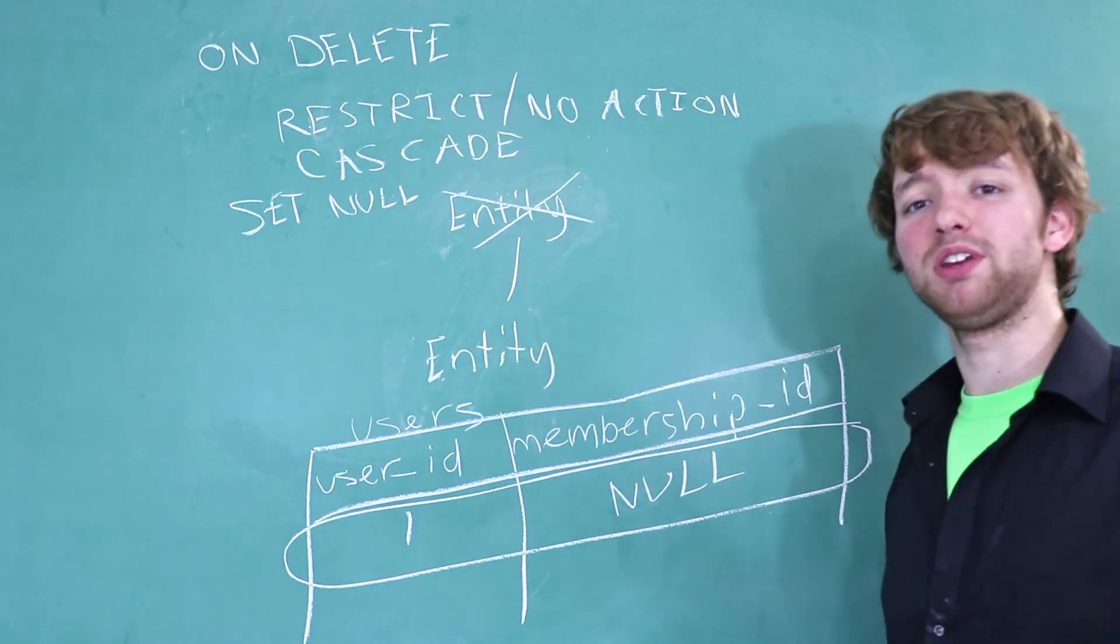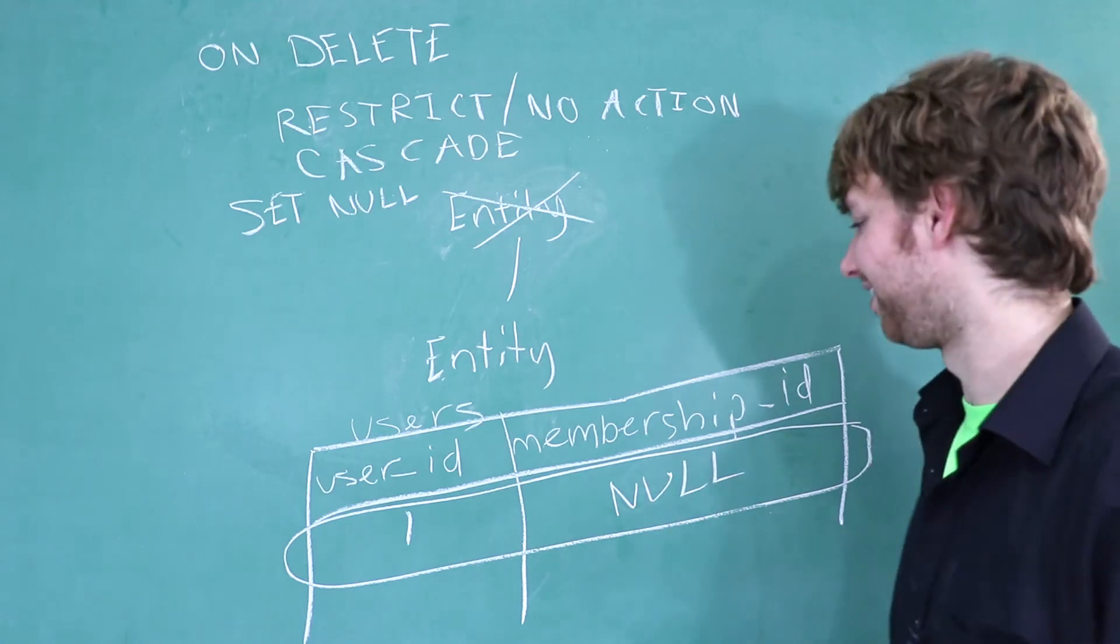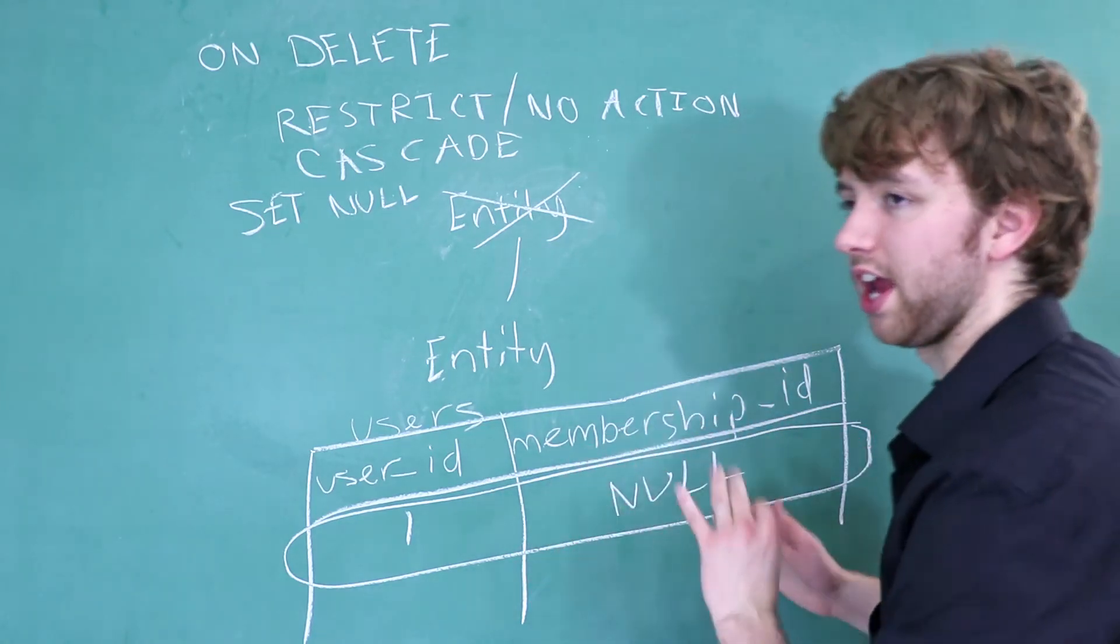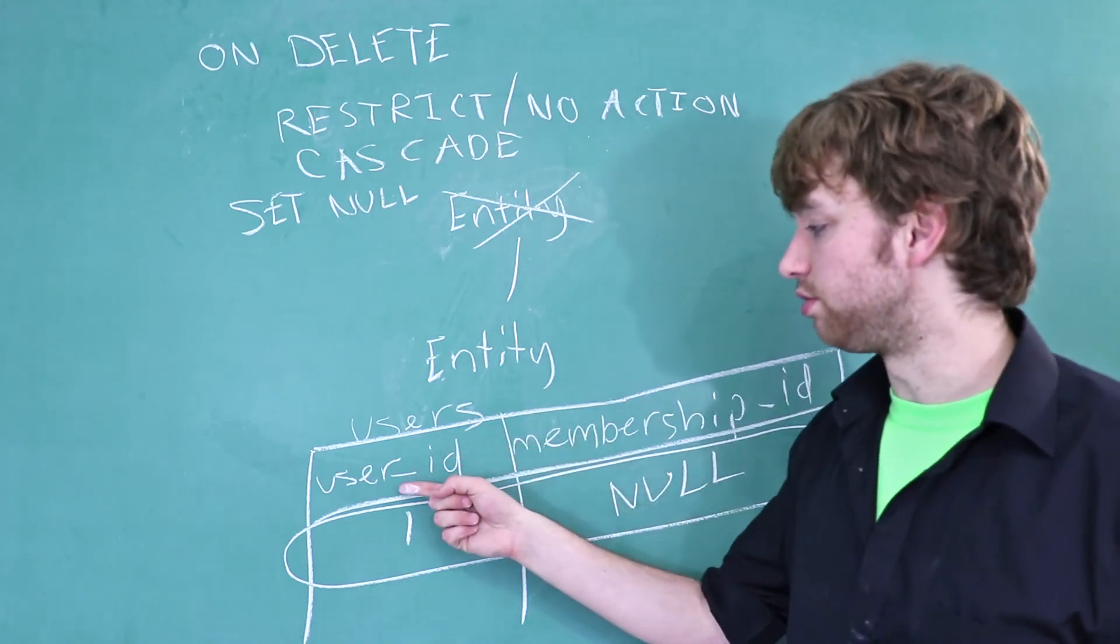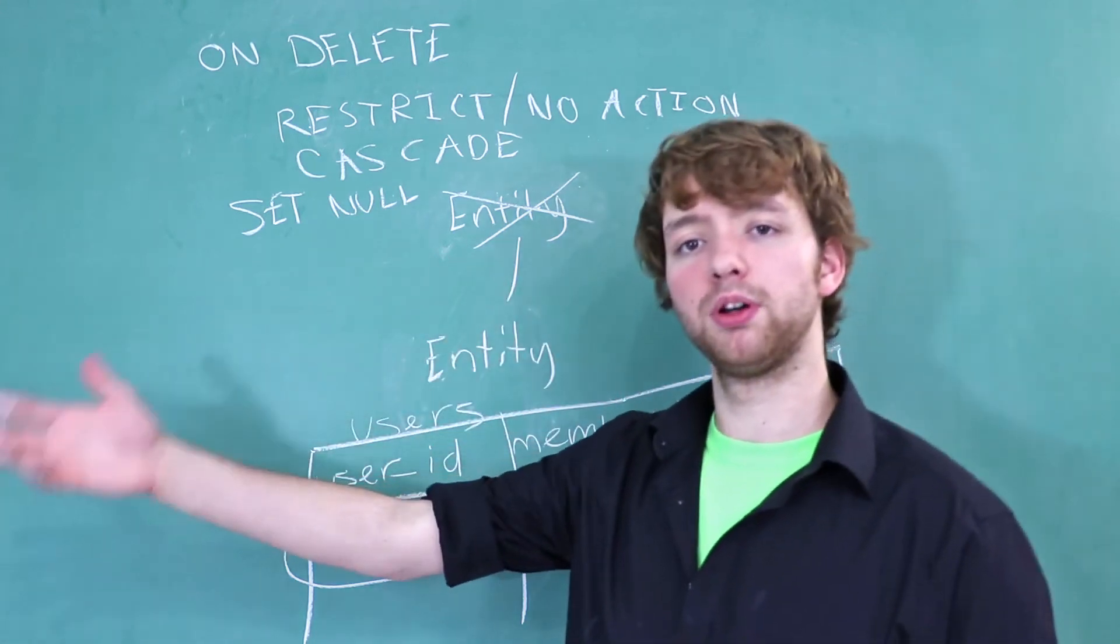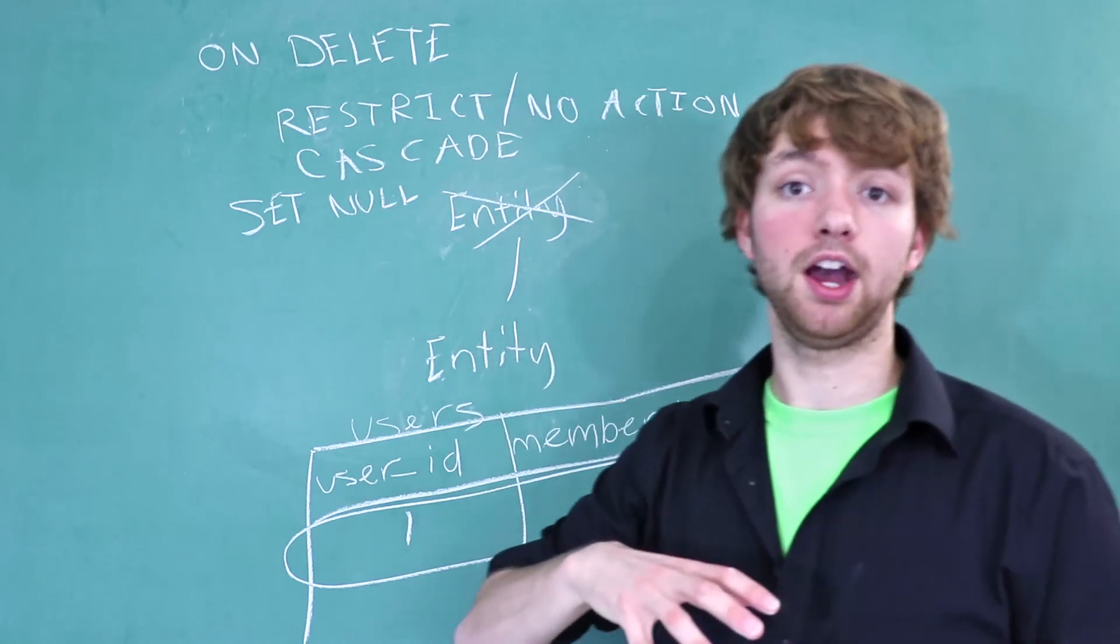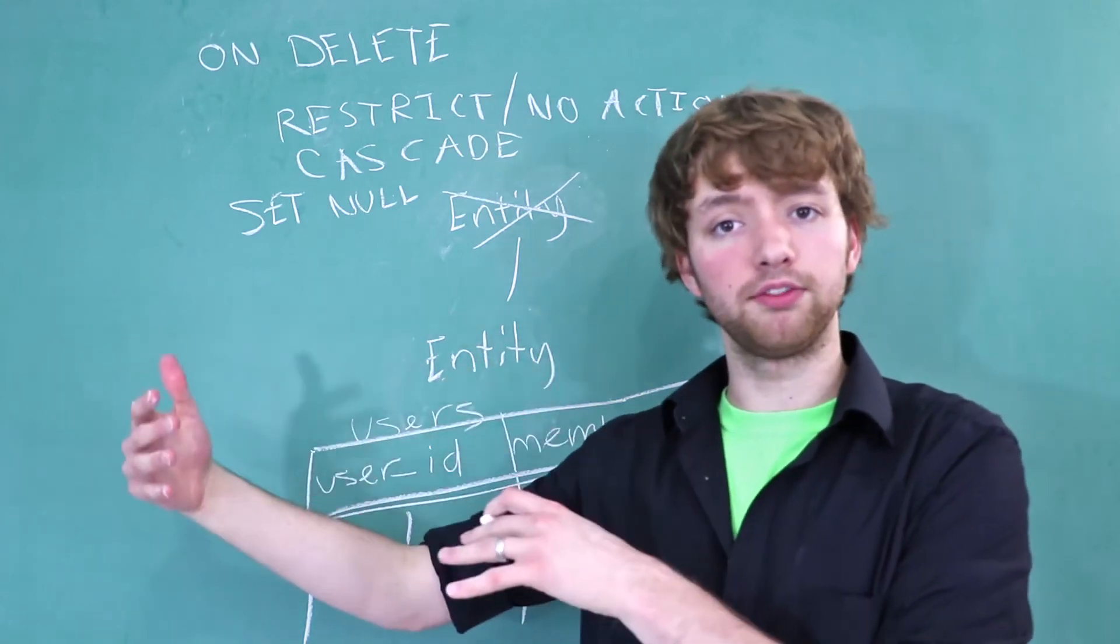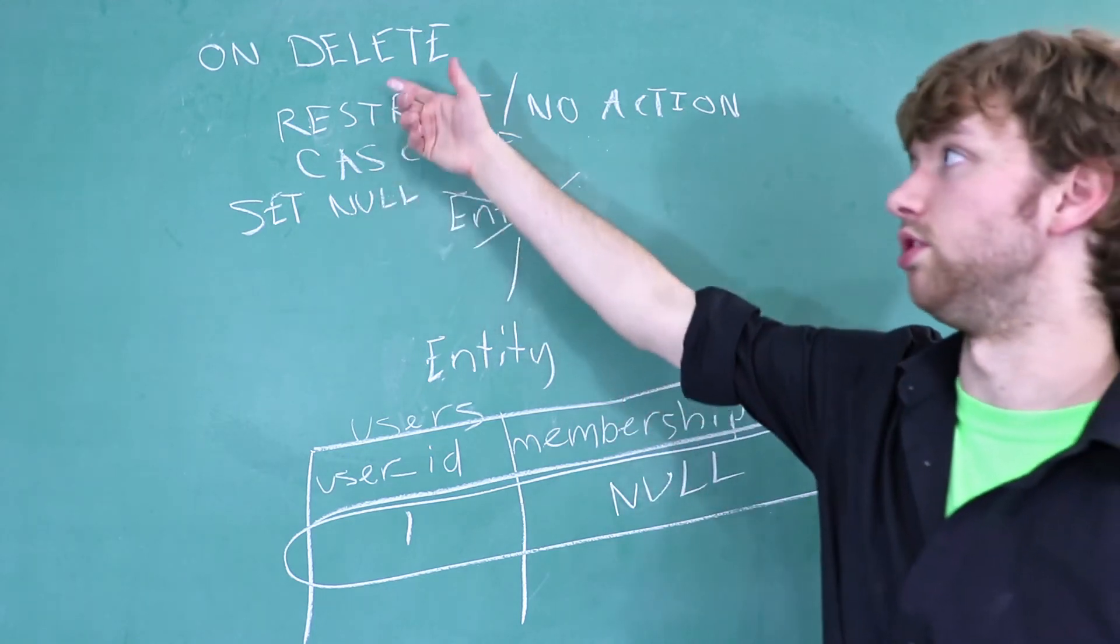That's a decision that is going to be up to you, or your boss, or someone else. So make sure you're careful to understand how your tables are going to be used. Does it make sense for a user to not have a membership? Well, maybe they signed up, and they got rid of their membership, and they still have an account, but they just can't use any of the stuff. Well, then it would make sense to allow nulls here, and you might set it to set null when you delete.